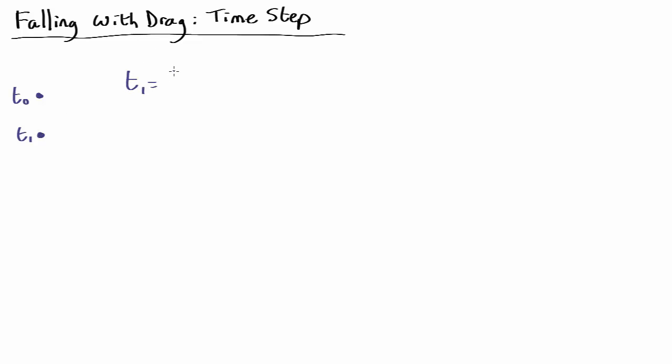Where t1 equals t0 plus our time step, delta t, where delta t is small, in this case maybe 0.1 of a second or 0.01 of a second or something like that.